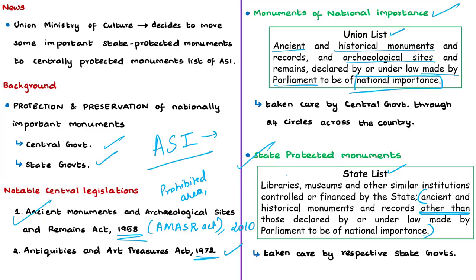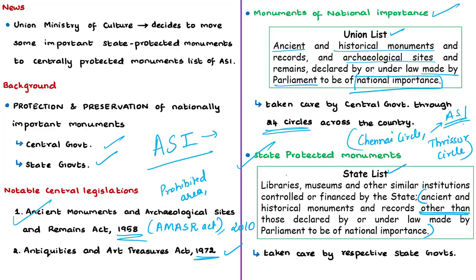For maintenance of ancient monuments and sites of national importance, the entire country is divided into 24 circles. For example, the Chennai circle covers Chennai, Kanchipuram, and Madurai districts of Tamil Nadu. The Thrissur circle covers Kanyakumari, Tirunelveli, and Nilgiri districts of Tamil Nadu. These two circles take care of the monuments of national importance in Tamil Nadu and come under the Archaeological Survey of India, not the Tamil Nadu state government.